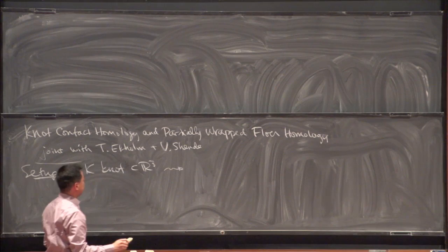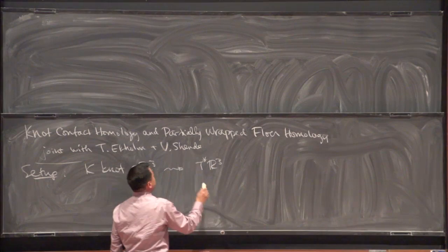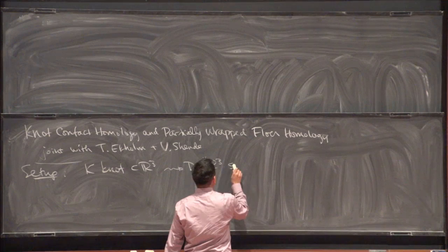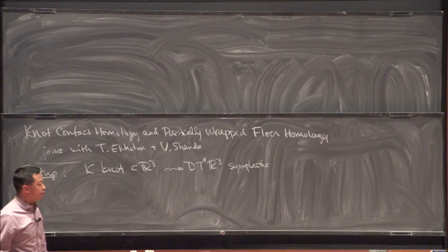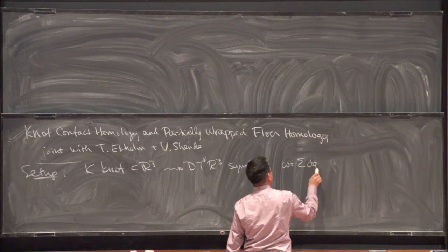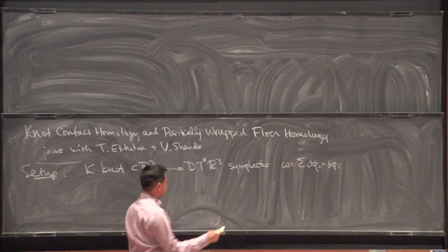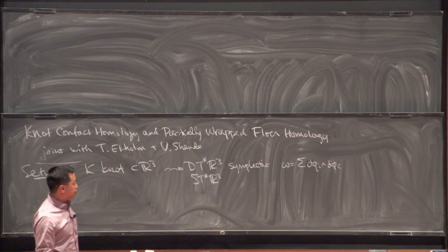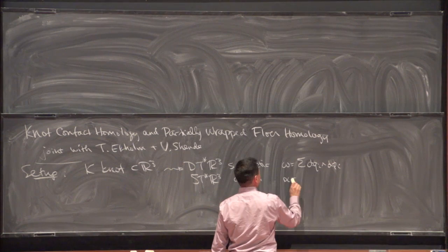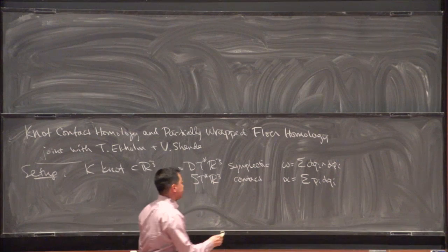We can look at the cotangent bundle of R³ — maybe I'll just take the disk bundle associated to it. This is a symplectic manifold; there's a standard symplectic form on it. Its boundary is the unit cotangent bundle, the cosphere bundle of R³, and this is a contact manifold. The contact one-form is just the sum of p_i dq_i, where the q_i are the position coordinates and the p_i are the dual momentum coordinates.